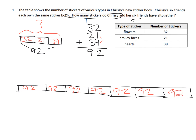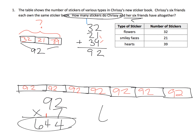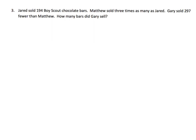We're going to do 92 multiplied by 7 using the standard algorithm. Seven times 2 is 14 ones, so I put the 4 and carry the 10 into the tens column. Then 7 times 9 tens is 63 tens, plus one more ten is 64 tens. So we have 644 stickers in all.